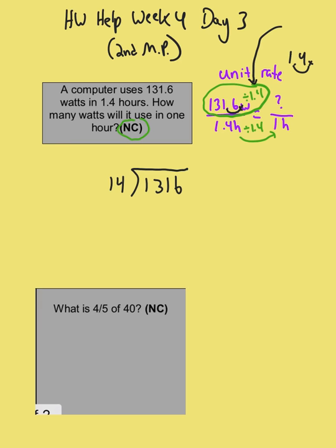That's the division problem I'm going to do. Now the next step is I need to figure out what 14 is going to go into. It does not go into 1 and it does not go into 13, so I have to figure out how many times 14 will go into 131.